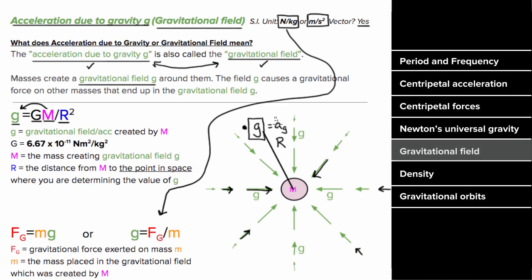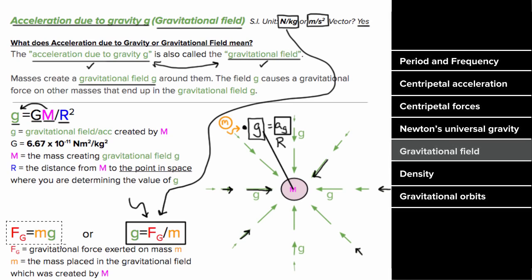The gravitational field equals the acceleration due to gravity of an object placed at that point, and it also represents the gravitational force per kilogram at a point in space. When rearranged, this gives the familiar formula that the force of gravity is m times g.